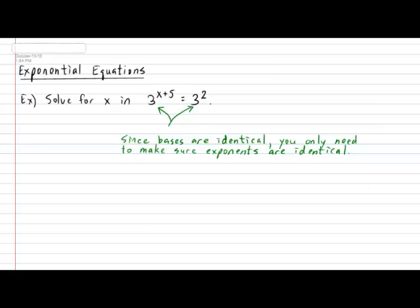So, in essence, all you really need to worry about is making sure that the exponent x plus 5 is identical to the exponent on the right side, which is 2. That leads you to be able to solve the value of x extremely easily. In this example, x is equal to negative 3. At this stage, you can always feel free to perform a little self-check: take that value of x that you just found, plug it back in, and see if the expression works.